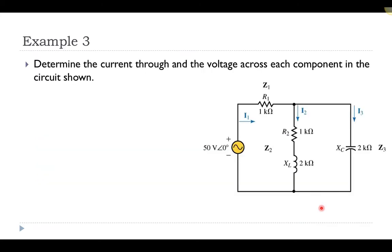In this example, we're going to look at a series-parallel network with multiple impedance values connected in series and parallel to an AC source. Our picture shows a voltage supply that is an AC source with multiple components connected in series and parallel. Our goal is to determine the current through and the voltage across each component, and we're going to do this in a step-by-step method, redrawing pictures along the way and working backwards to get to the final answer.